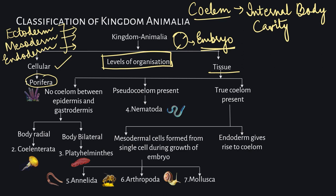The ectoderm is the outer layer, responsible for the development of the epithelial tissue. The mesoderm is responsible for the middle layer. The endoderm — 'endo' means inner — is responsible for the innermost layer. The number of layers present in an embryo determines what layers the adult body will naturally develop into.